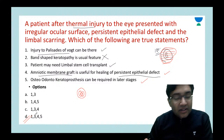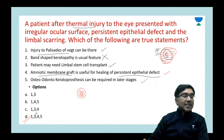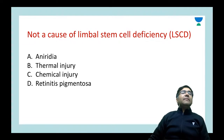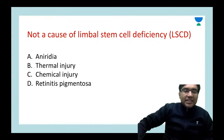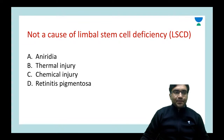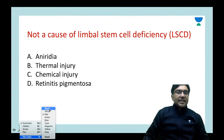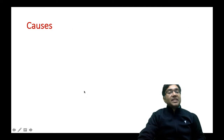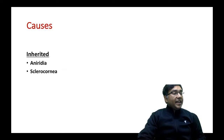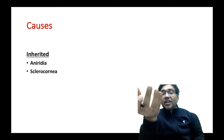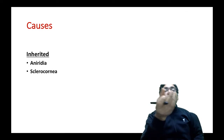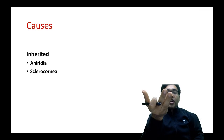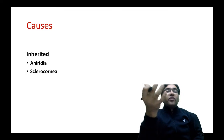Not a cause of limbal stem cell deficiency: options are aniridia, thermal injury, chemical injury, or retinitis pigmentosa. The answer is D — retinitis pigmentosa. Thermal and chemical injury definitely cause limbal stem cell deficiency. Congenital causes include aniridia (iris not formed) and sclerocornea (gradual transition from sclera to cornea with no clear limbal area). Acquired causes include chemical injury, thermal trauma, mitomycin, prolonged contact lens use, and syndromes like Stevens-Johnson syndrome and epidermolysis bullosa, where damage to ocular mucous membranes causes limbal stem cell deficiency.